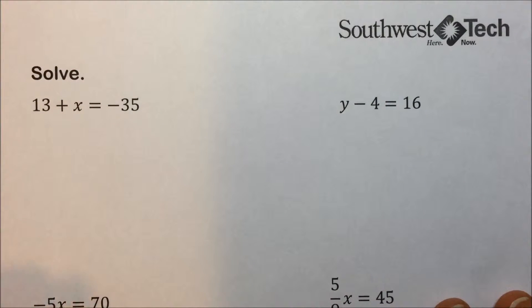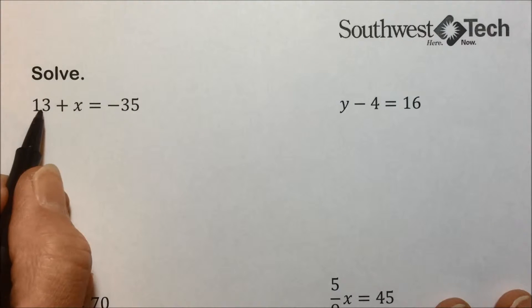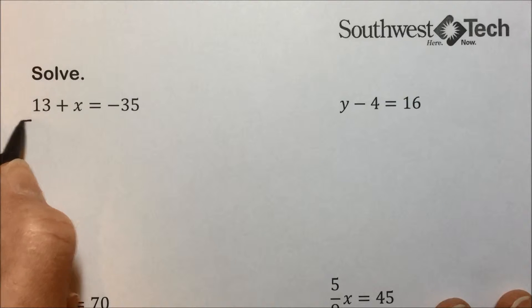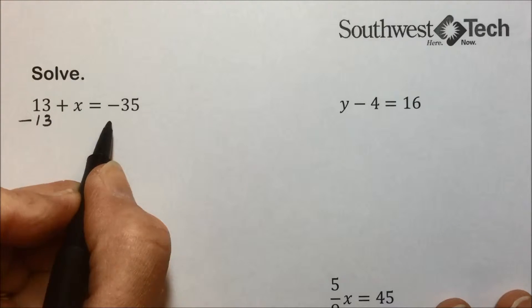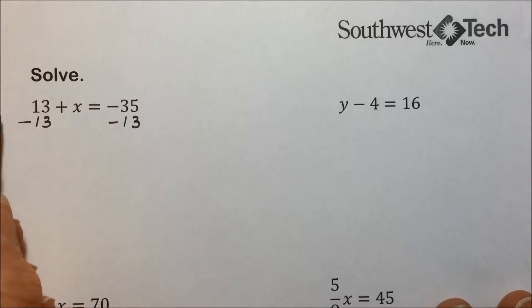To illustrate that, in this first problem I want to get x by itself, and to eliminate the 13 I need to subtract 13. As I said there isn't a subtraction principle, but I can also say that I am adding a negative 13. So I am using a variation of the addition principle.